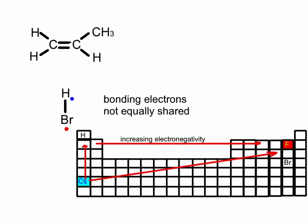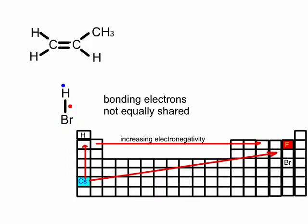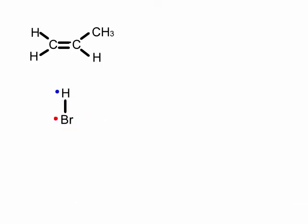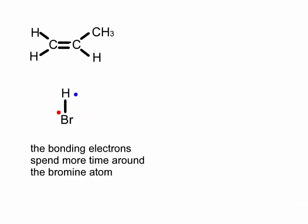HBr is a polar molecule. Look at the change in electronegativity of elements in the periodic table. It increases from cesium in the bottom left up to fluorine in the top right — it increases as you go up a group and as you go across a period. Bromine, being much further to the right than hydrogen, is more electronegative. Looking at the electrons here, they don't actually move with blue around the hydrogen and red around the bromine as shown.